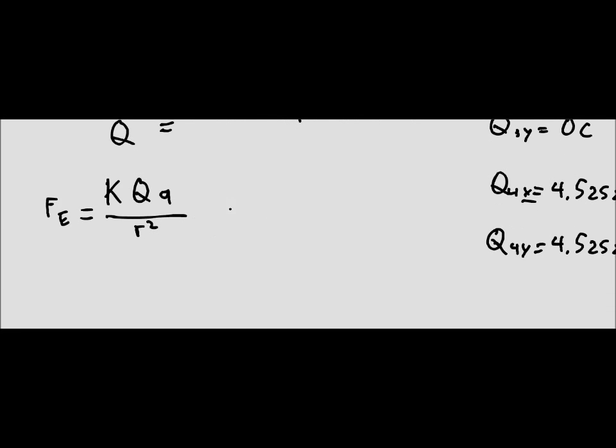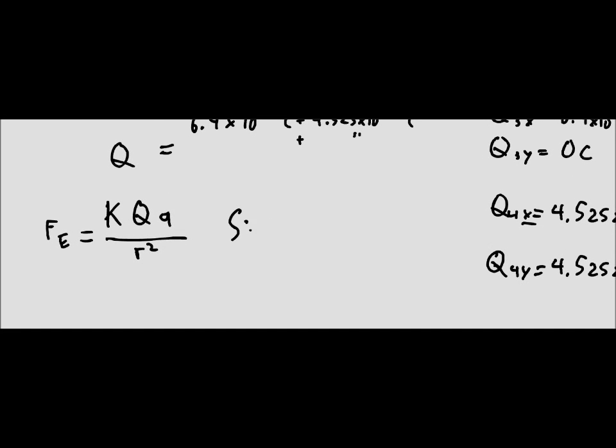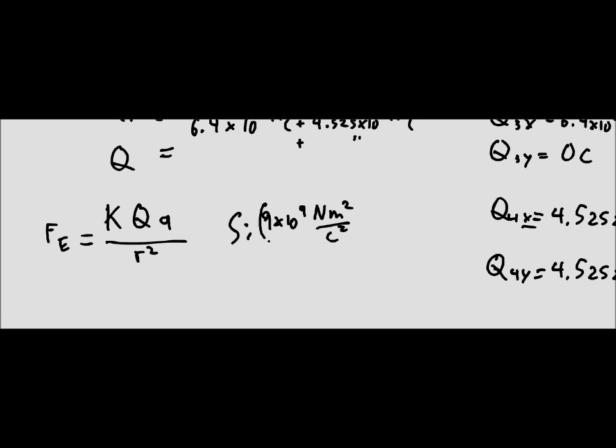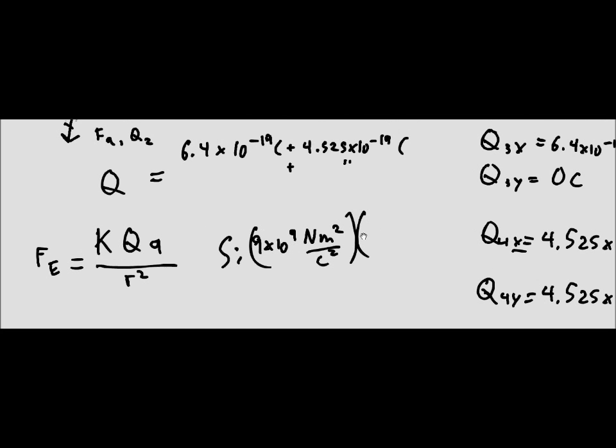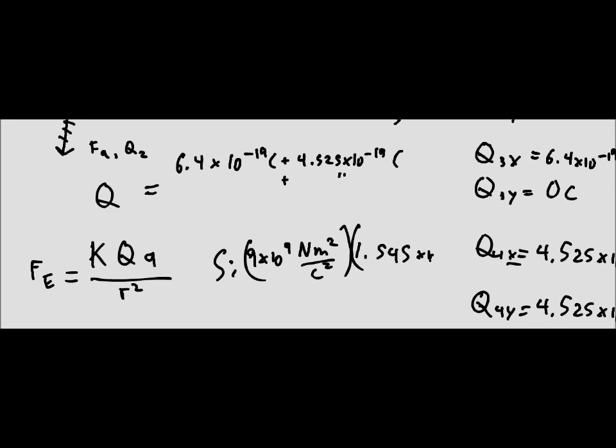And so what we do is we just plug all of these in. And so substitute, once again, k is 9 times 10 to the 9 newtons meters squared over coulombs squared times 1.545 times 10 to the negative 18. And that's just because we added all of those together.